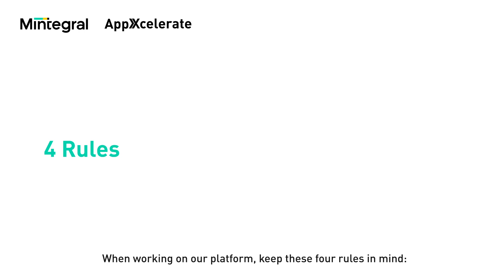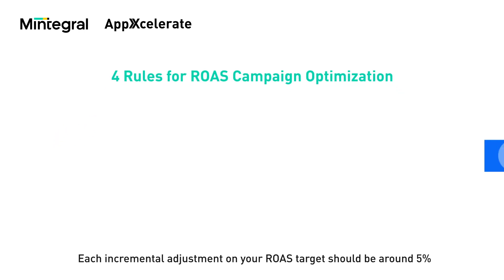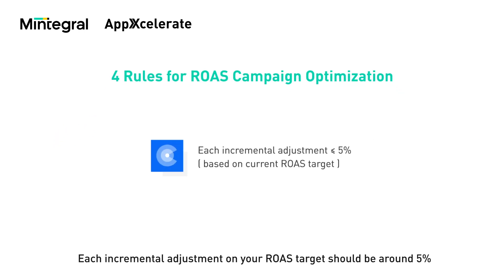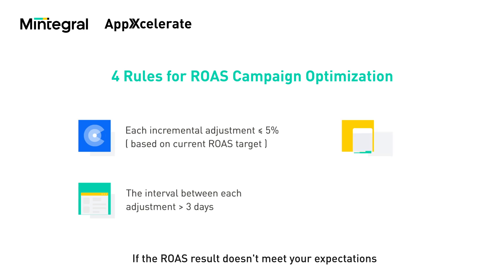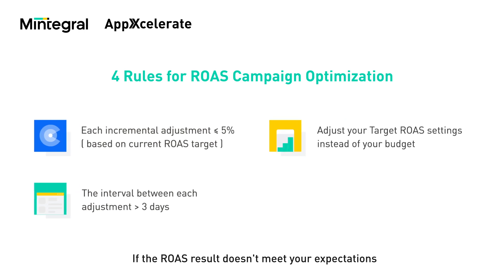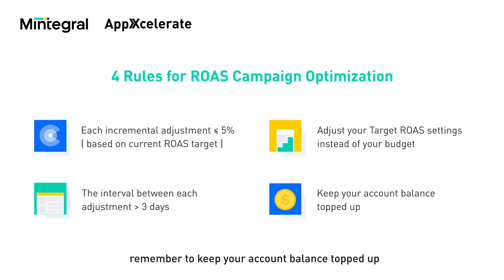When working on our platform, keep these four rules in mind. Each incremental adjustment on your ROAS target should be around 5%. The interval between each adjustment should be three days at a minimum. If the ROAS result doesn't meet your expectations, please change your target ROAS setting instead of your budget. Last but not least, remember to keep your account balance topped up.